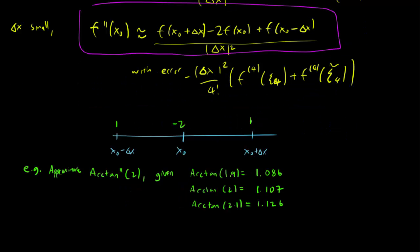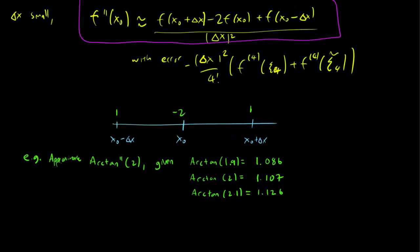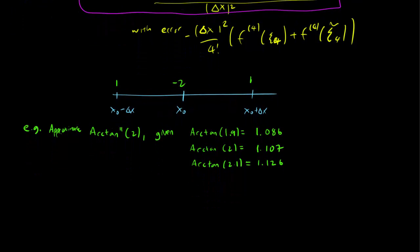Let's look through an example. Let's try to approximate the second derivative of arctan at 2, given that arctan(1.9) = 1.086, arctan(2) = 1.107, and arctan(2.1) = 1.126. These are values you can easily find using a computer, whereas the computer might not be able to differentiate certain complicated functions.